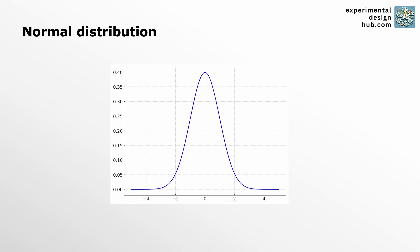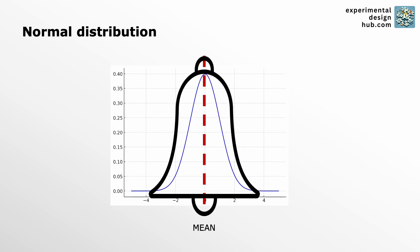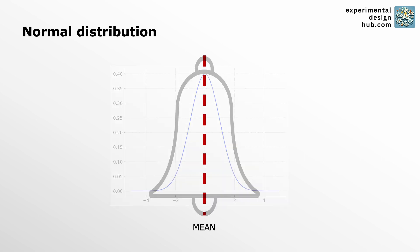So what was a normal distribution again? A normal distribution is just a way of describing how your data tends to scatter around its mean. It's this famous bell-shaped curve you've probably seen a million times, but if not, no problem.